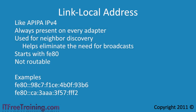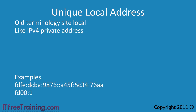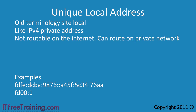Link local addresses are not routable. The next address type is unique local address — sometimes referred to as site local, but that is an old term. These addresses are like IP version 4 private addresses. You can allocate these IP addresses any way you want, but they are not routable on the internet. You can however route them inside your network. Unique local addresses start with FC00 or FD00. You can also start with FEC0, but this is the oldest standard and is being deprecated.